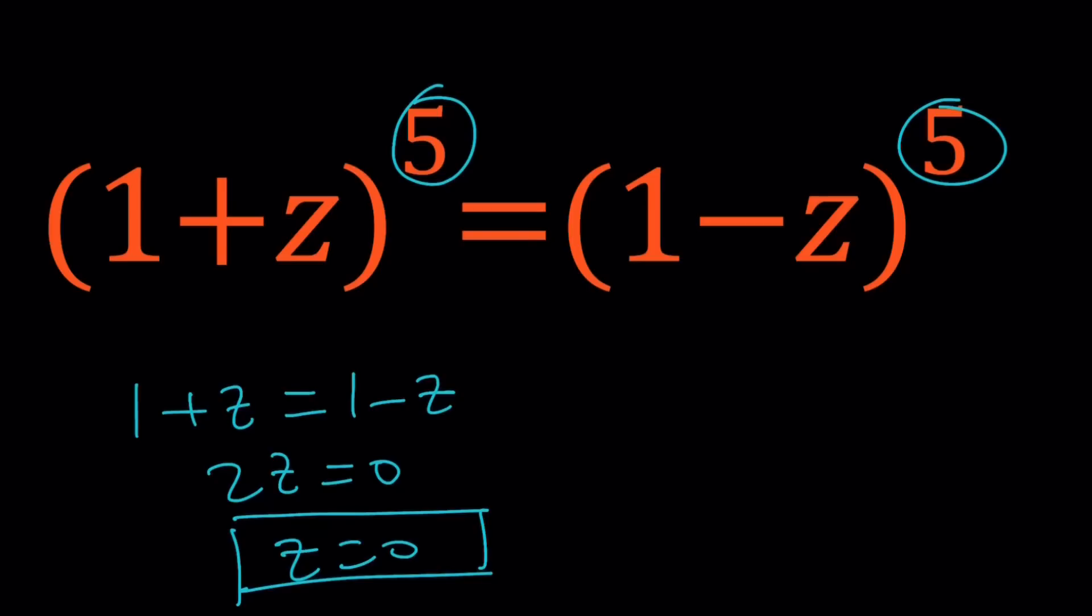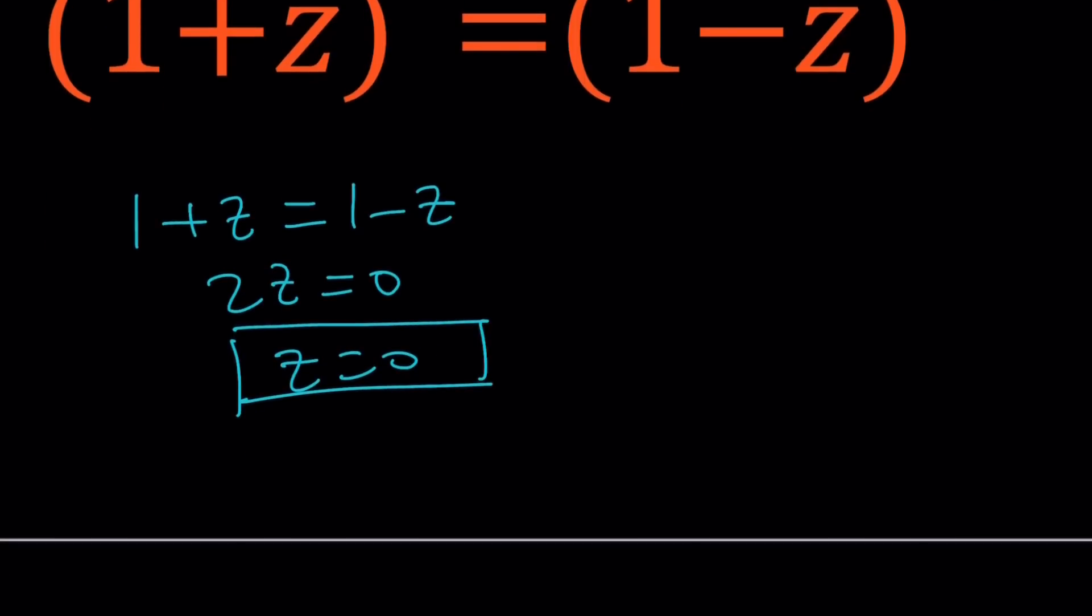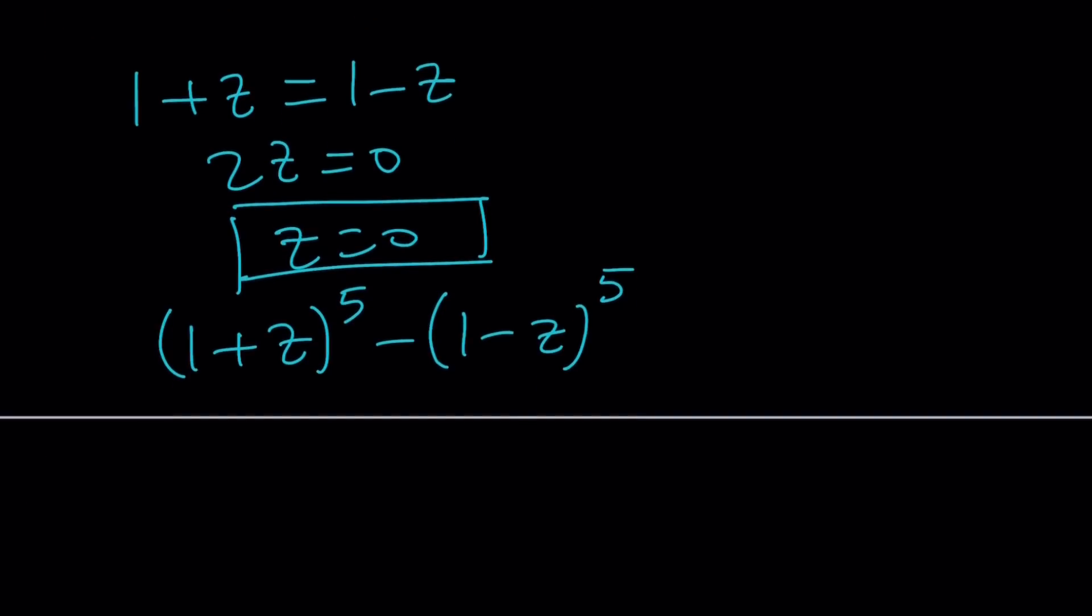So we can think of it this way too. We can subtract (1-z)^5 from both sides, and then write it using the binomial theorem. Or we could use a formula for a^5 - b^5, which is (a-b) multiplied by (a^4 + a^3*b + a^2*b^2 + a*b^3 + b^4).